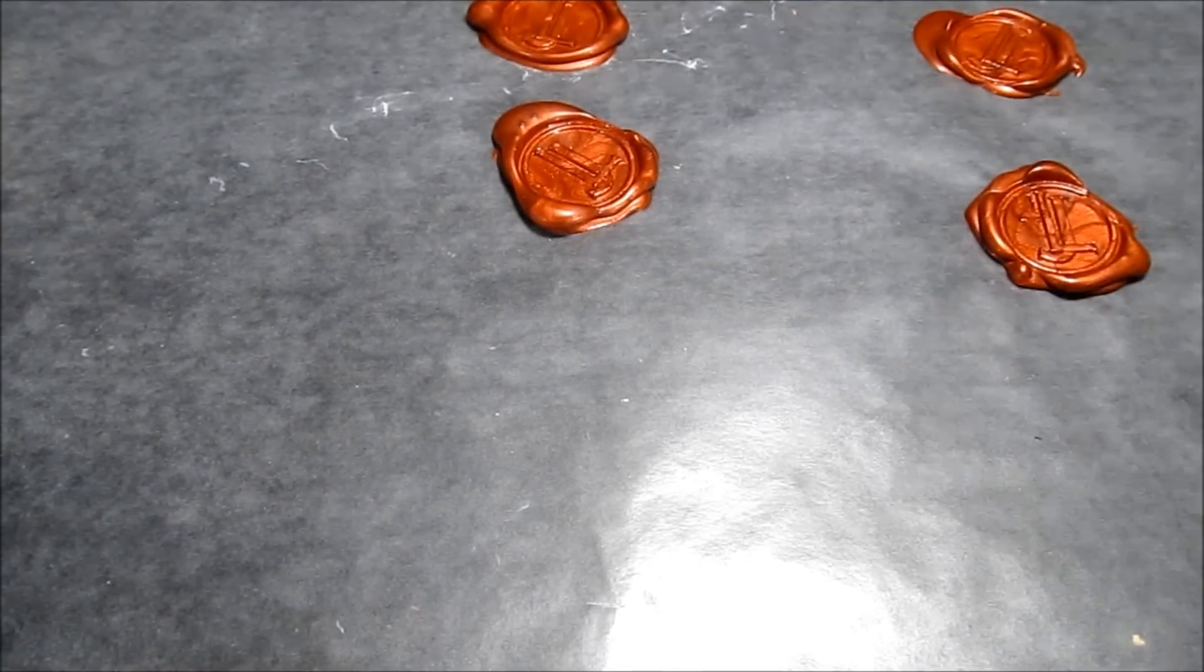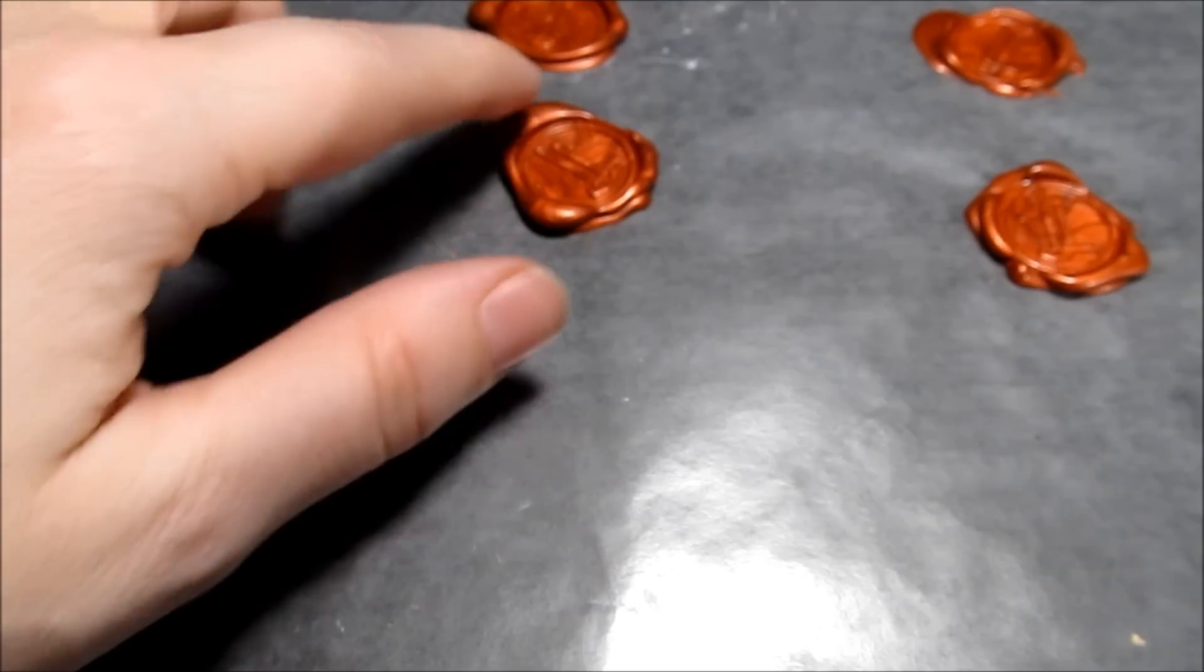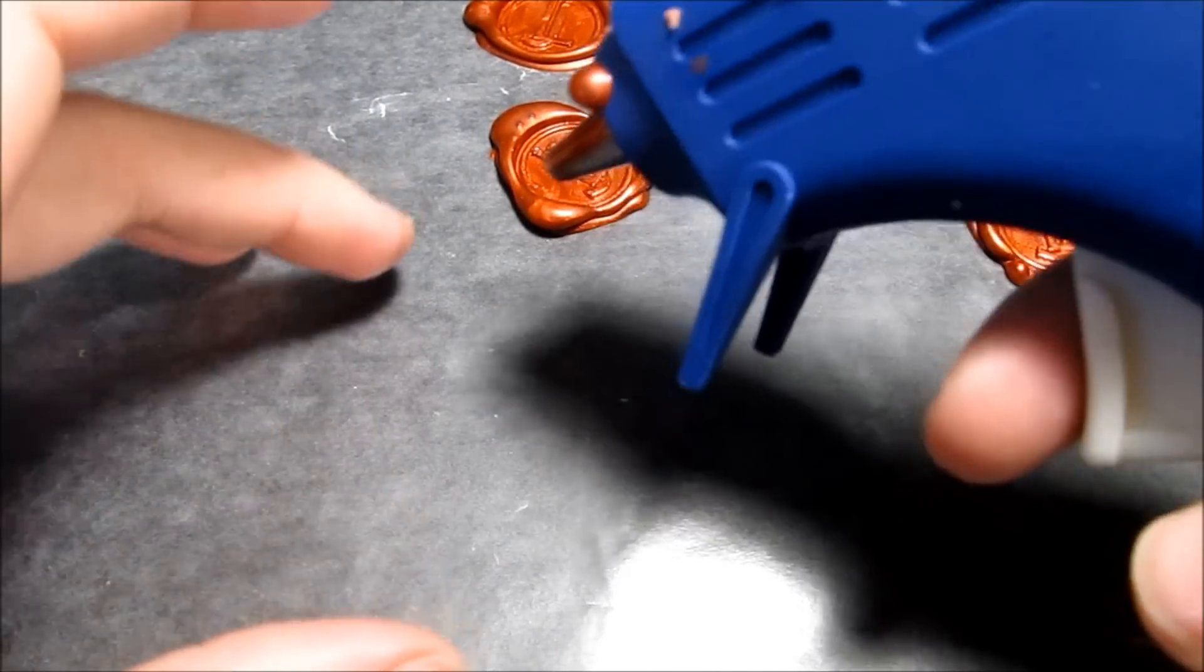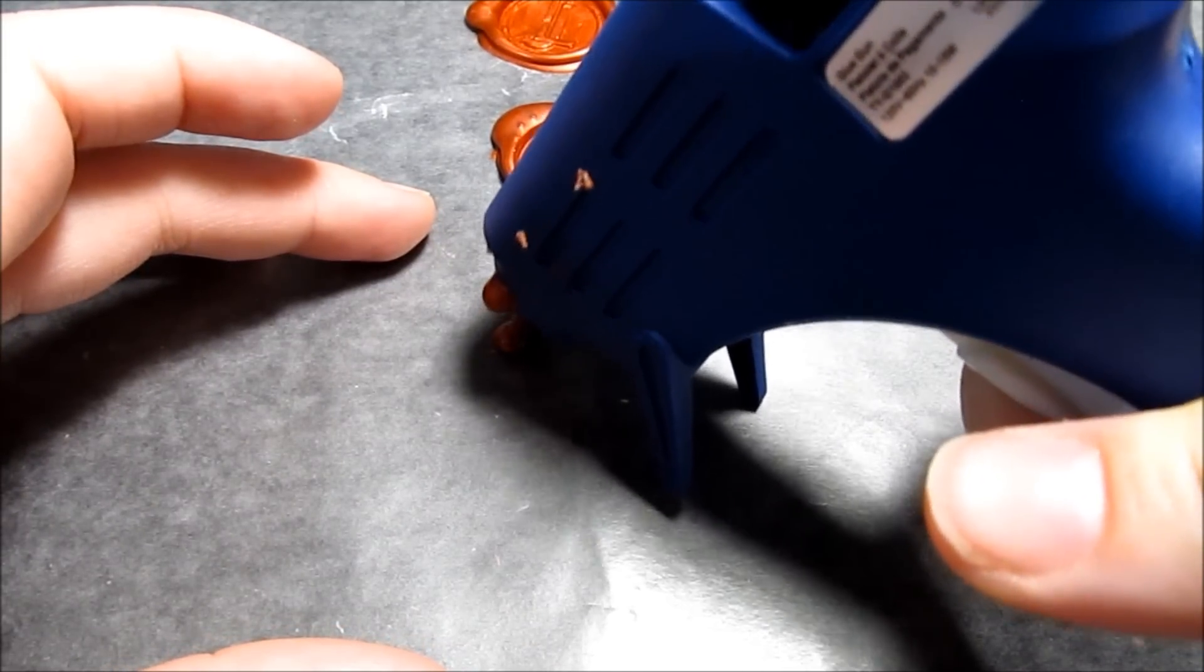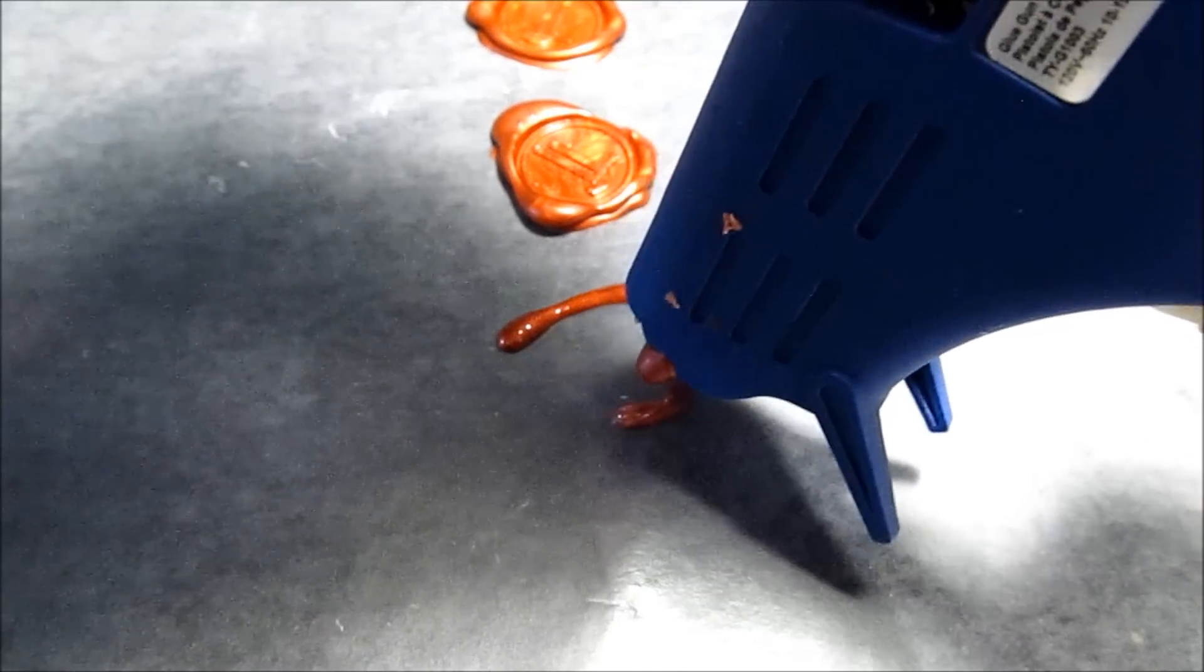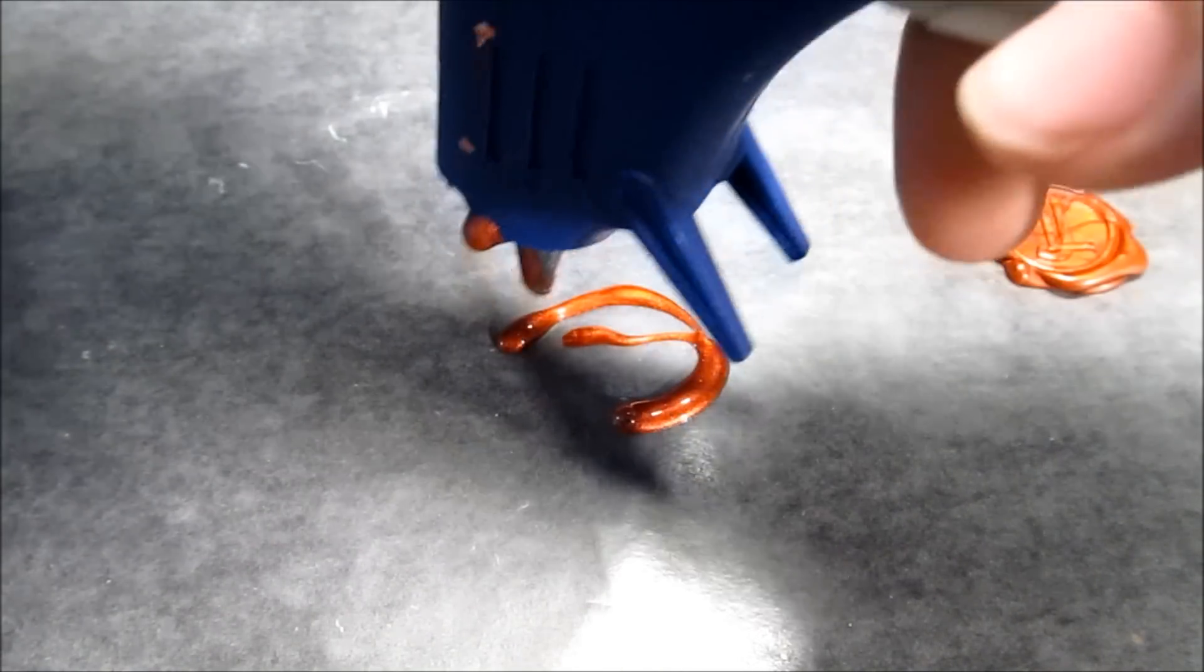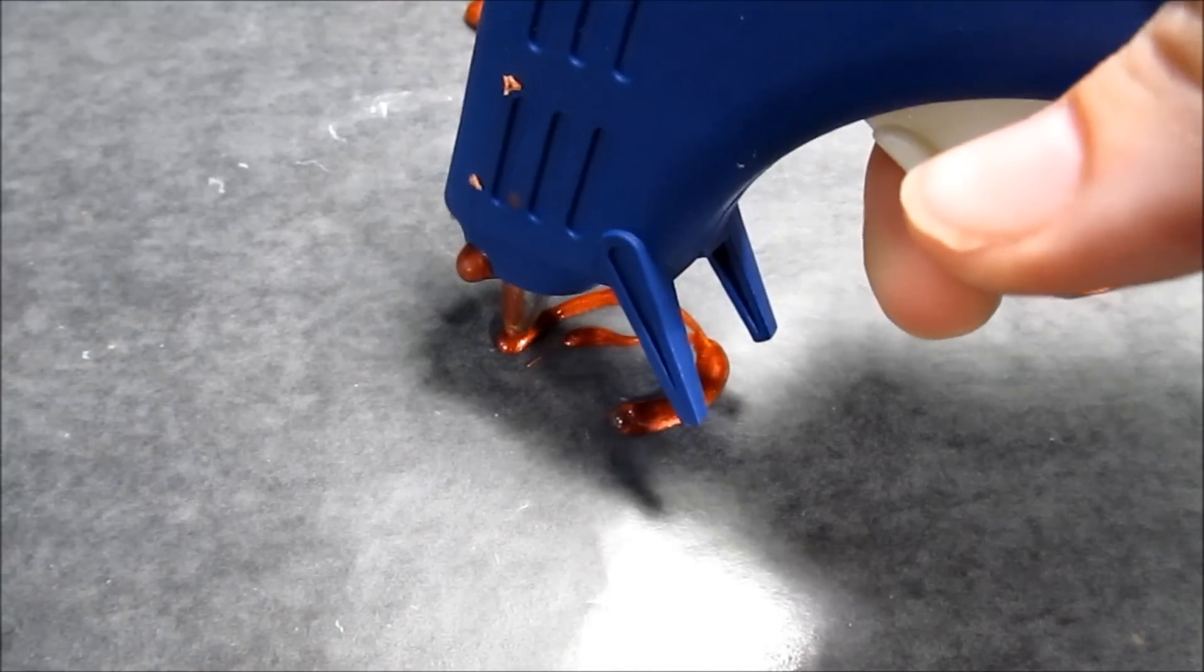So first, you want to figure out how big you want to make them. I like to make mine a little bit bigger than my metal stamp itself. And you want to create an outline for the stamp because this will help create some texture on the sides. Don't worry about being sloppy or anything. It all adds character.